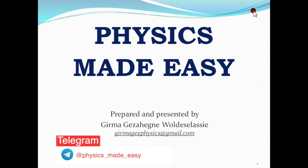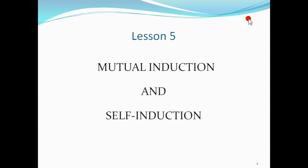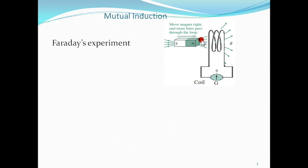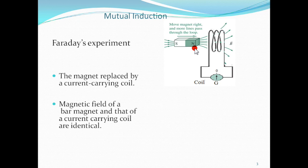In this video lesson we will discuss mutual induction and self-induction by electromagnetic induction. In Faraday's experiment we used a magnet and a coil of wire to show the phenomenon of electromagnetic induction. The magnet produces a magnetic field around the coil, and by moving it forward and backward we change the magnetic flux through the coil and see induced electric current. This magnet can be replaced by a current-carrying coil, since the magnetic field produced by a bar magnet and a current-carrying coil are identical.